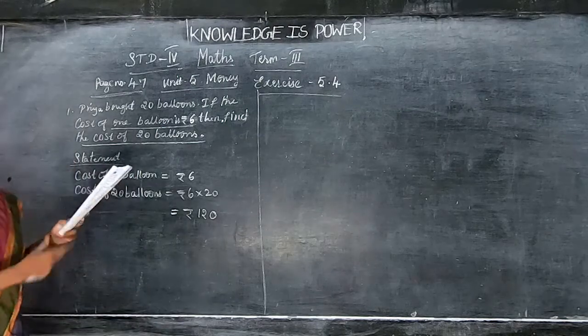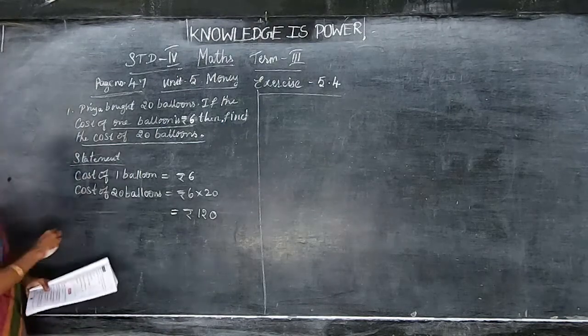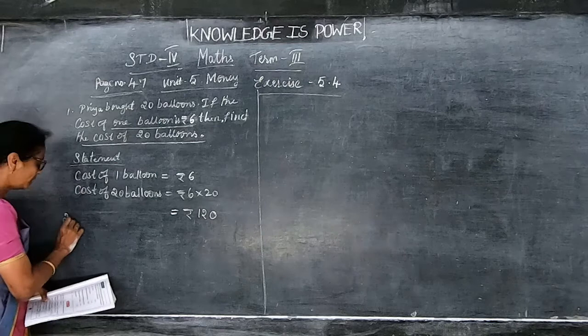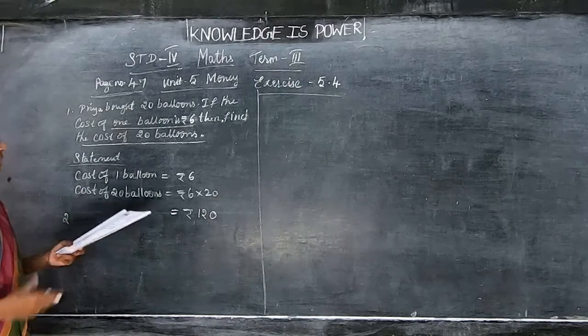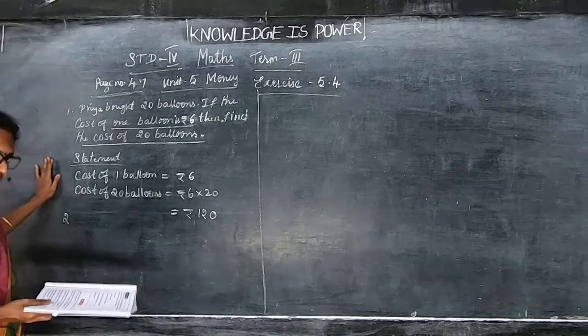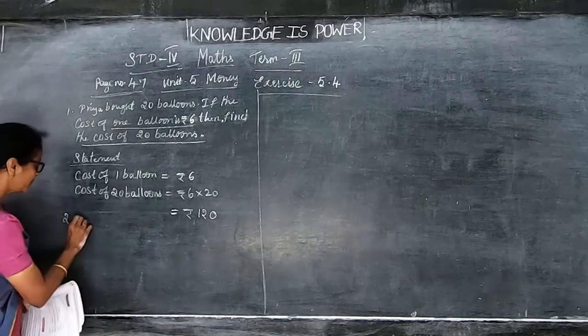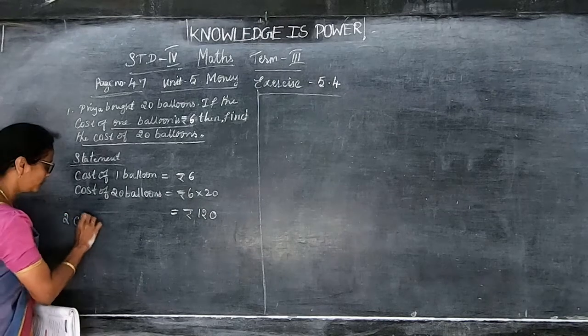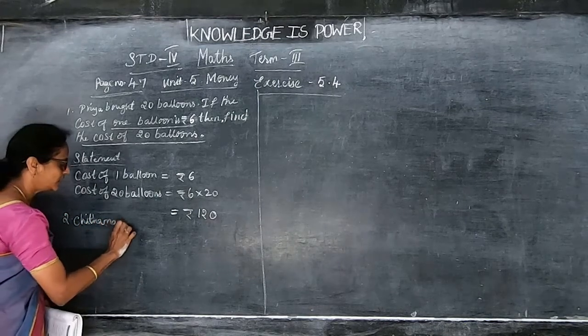Can you understand? Like that, the next sum is also given. You write the statement like this, multiply, and write the answer. This is the homework for you — write the statement as it is.